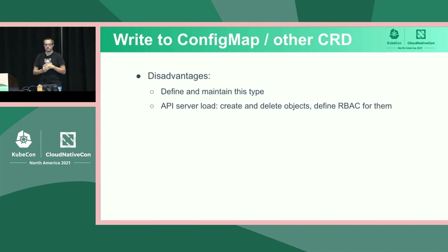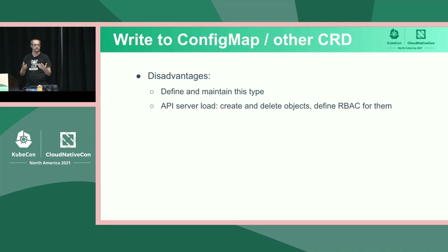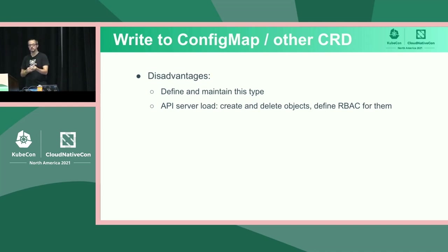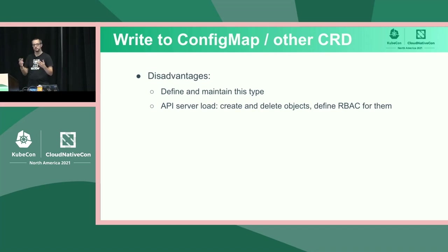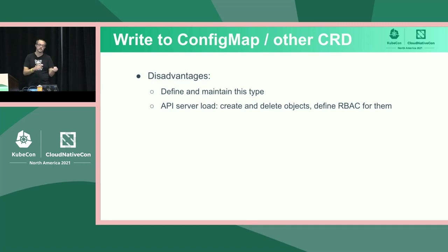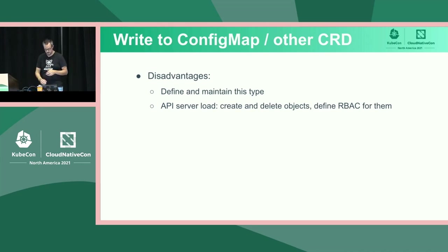There are some disadvantages. If we want to use config maps we can, but if we wanted to use our own custom type we'd need to define, manage, version, upgrade, and validate it. The bigger concern is additional load on the API server — instead of just writing to the pod we already use, we're also making frequent writes to a config map or custom resource. We have to create RBAC for that on every new task and execution, manage it, and delete things when done so they don't leak.